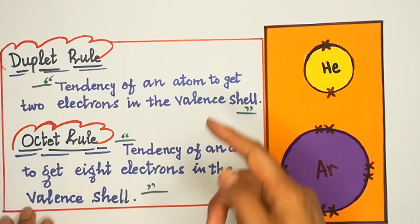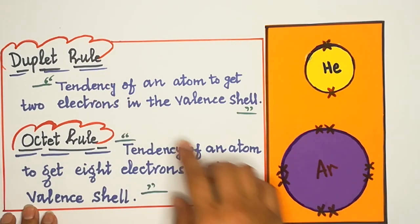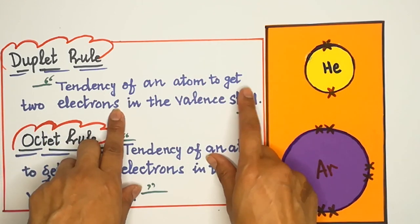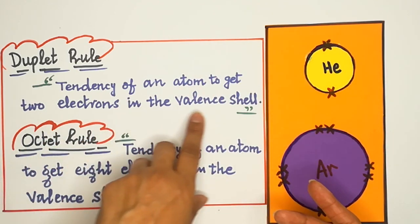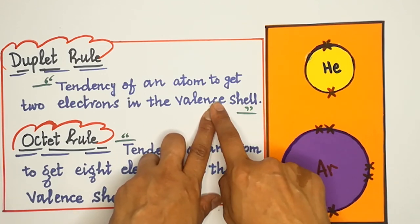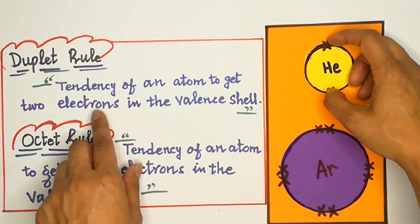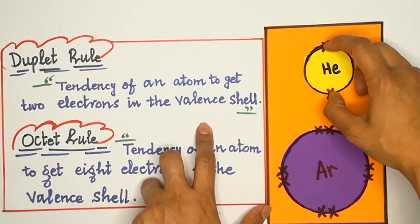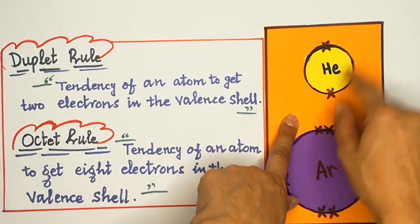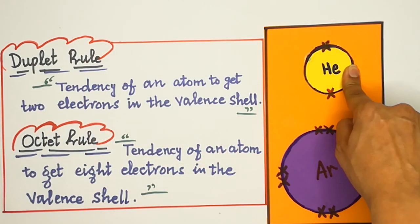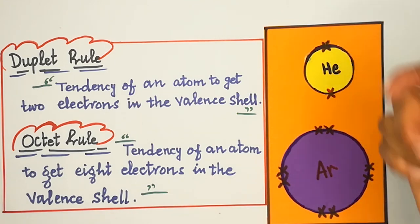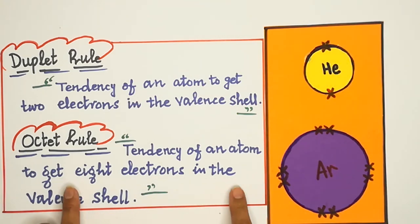Ab do baatein hain — tendency: ek duplet rule. Duplet rule kya kehta hai? Tendency of an atom to get two electrons in the valence shell. Koi bhi atom jo helium ki tarah hona chahta hai, by attaining two electrons to complete its valence shell — pehle ek tha, use do karna chahta hai — use kehenge duplet rule.